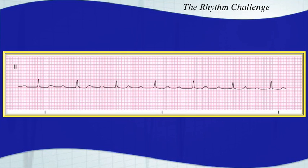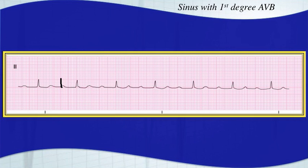Take a good look and hit pause when you're ready to interpret. This is a sinus rhythm with a first degree AV block. You have a consistent prolonged PR interval.